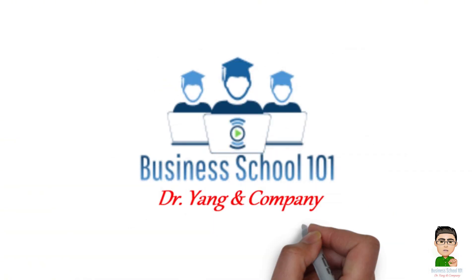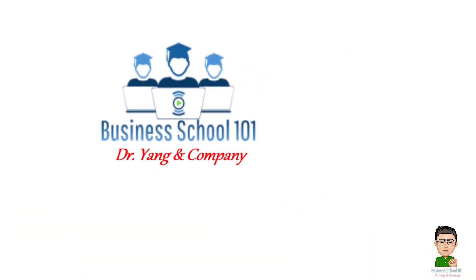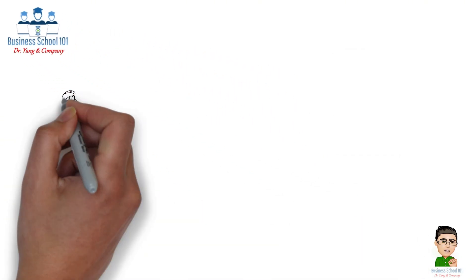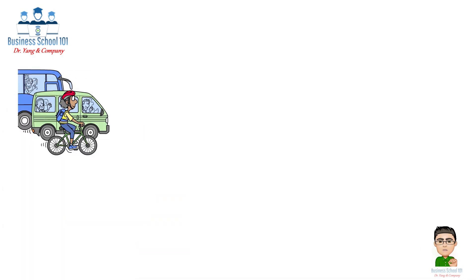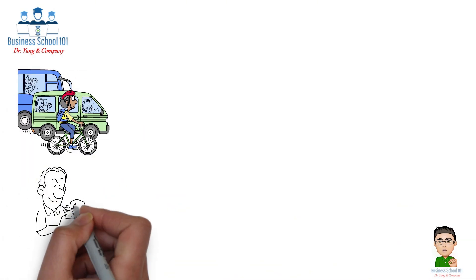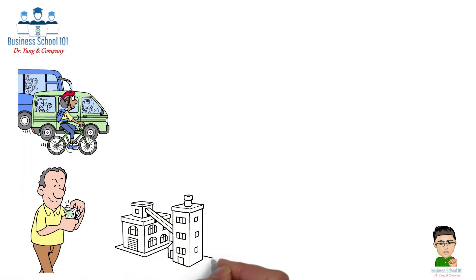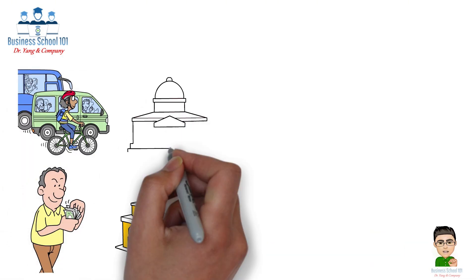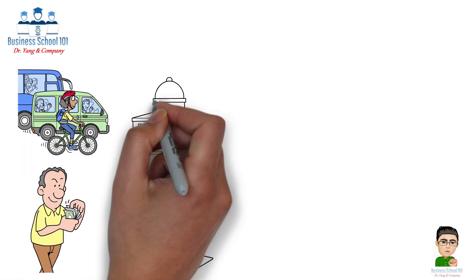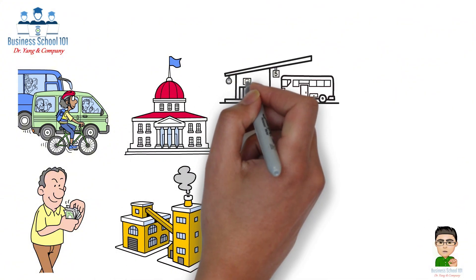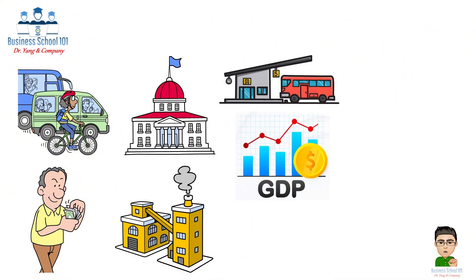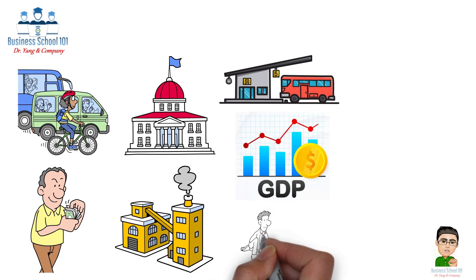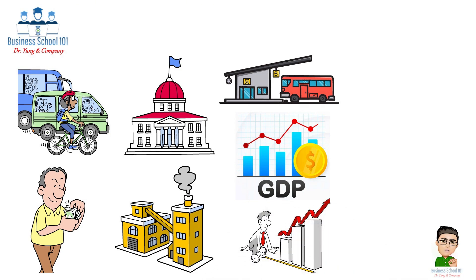Hello everyone, welcome to Business School 101. Imagine you're trying to figure out how well a country's economy is doing. Maybe you want to know if people are getting richer, businesses are growing, or if the government has more money to invest in infrastructure. Economists use a powerful tool called Gross Domestic Product, GDP, to measure the size and health of an economy.